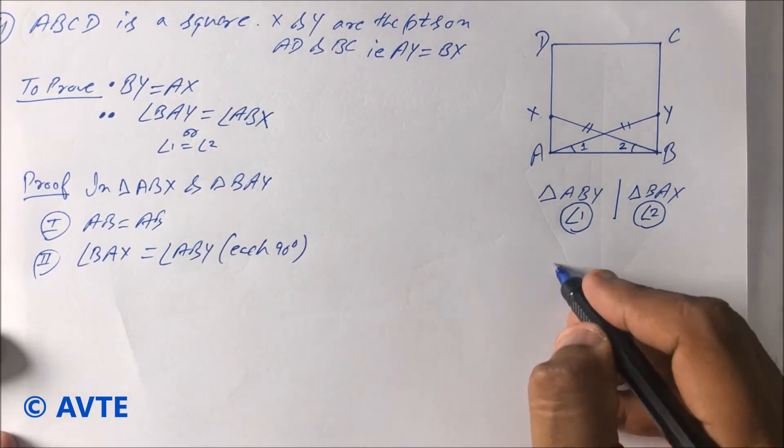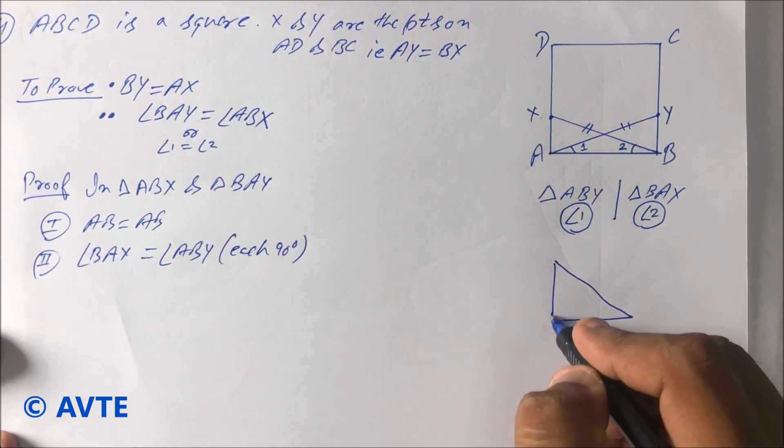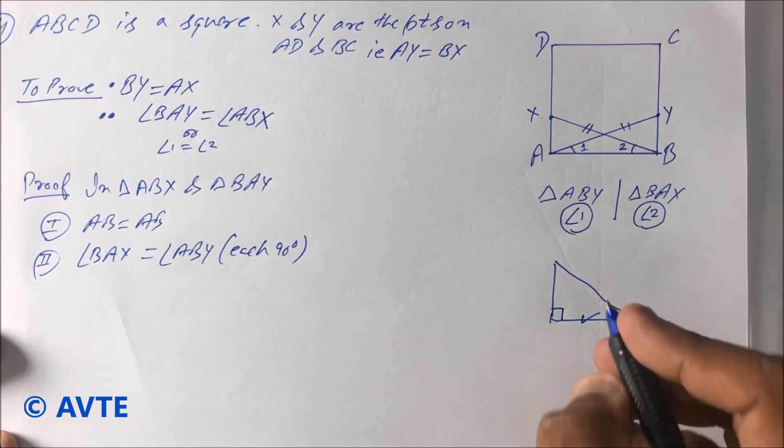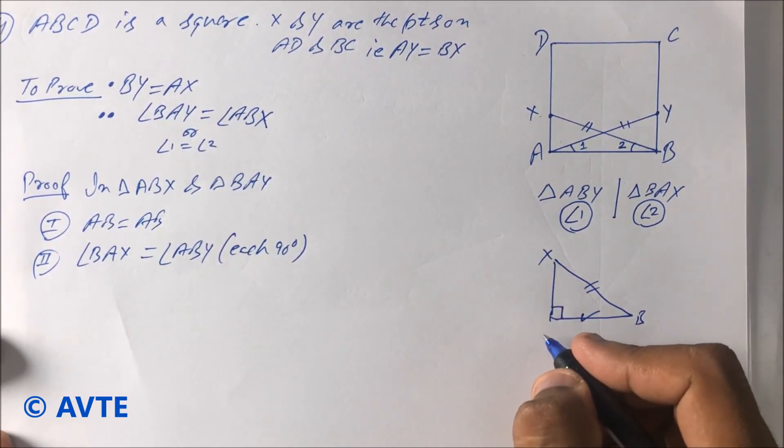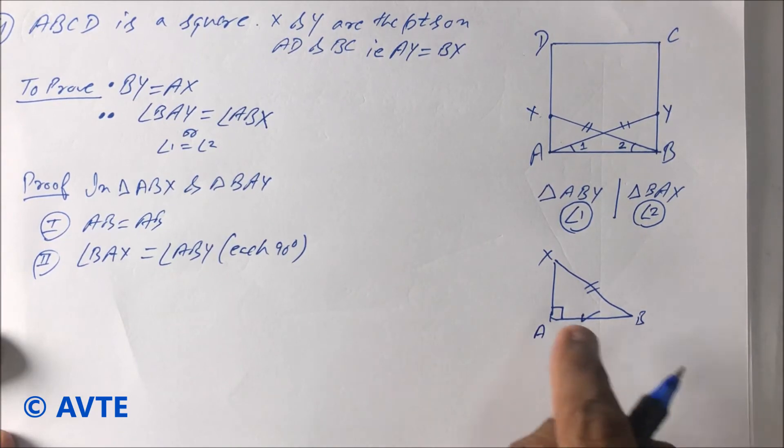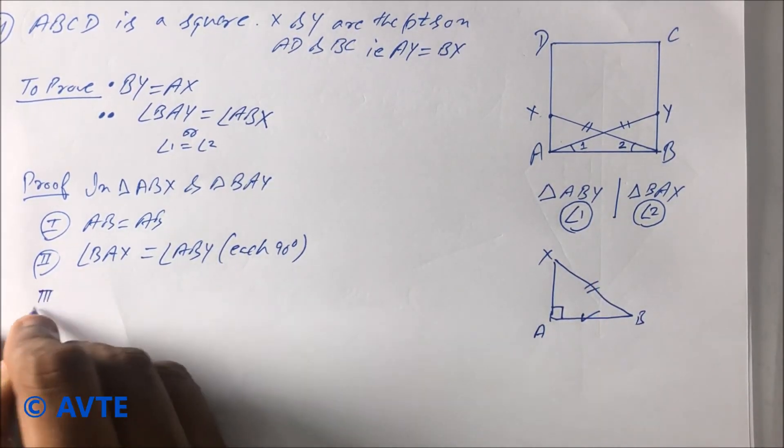So guys, we have taken two things: first you have taken this as common, and you have taken 90, and it is given BX. So you are using which rule? You are using RHS. Very good.